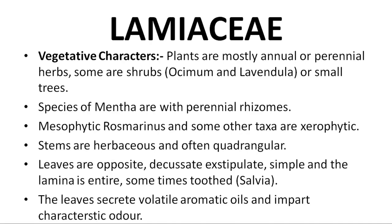Vegetative characters: Plants are mostly annual or perennial herbs. Some are shrubs or small trees. Ocimum and Lavandula are shrubs, but perennial and annual herbs are also present. Mentha species have perennial rhizomes, so Mentha species are not shrubs — they are also perennial. Some are mesophytic; Rosmarinus and some others are xerophytic.